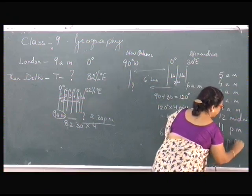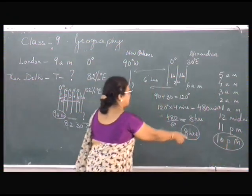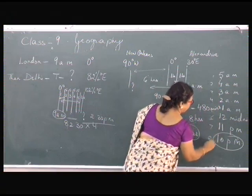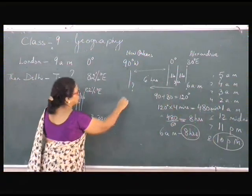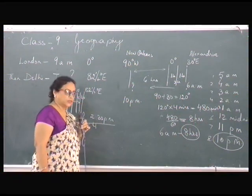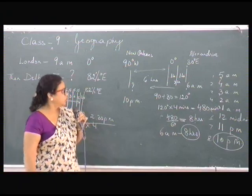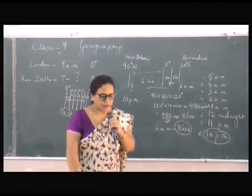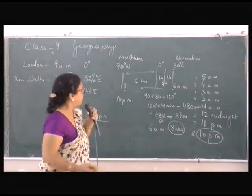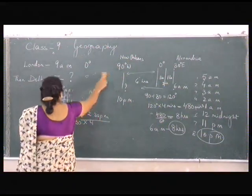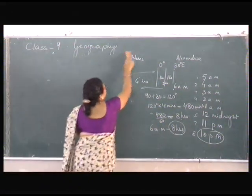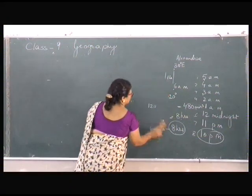It becomes 10 pm of the previous day. 8 hours difference: 1, 2, 3, 4, 5, 6, 7, 8. We are getting the timing as 10 pm of the previous day. That's how time calculations are done. We move over to the term International Date Line and great circles.